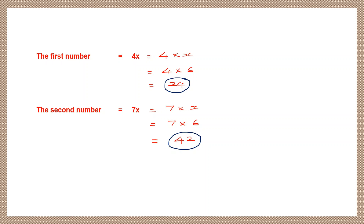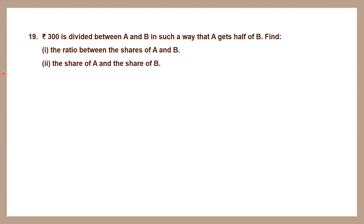We have found both numbers: 24 and 42. Question 19: Rupees 300 is divided between A and B in such a way that A gets half of B. We have to find two things: the ratio between the shares of A and B, and the actual share of each.